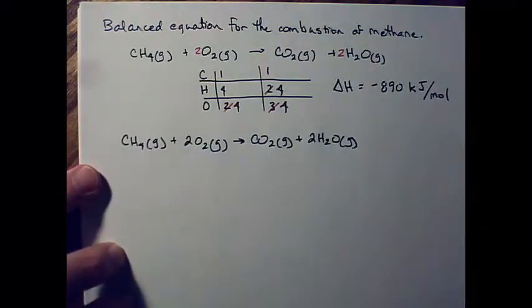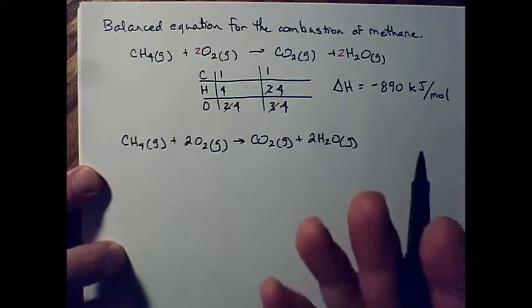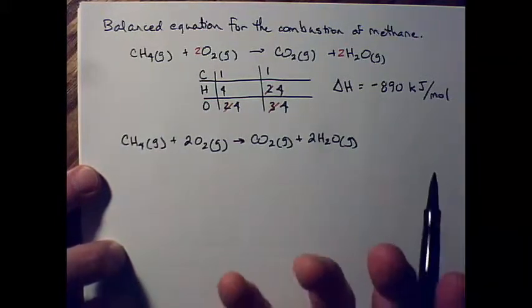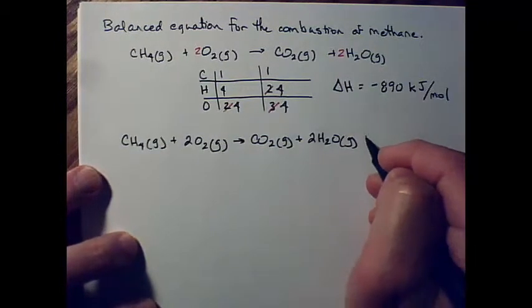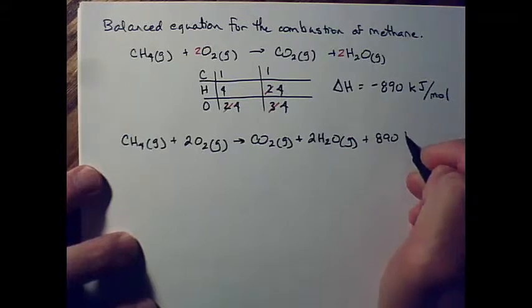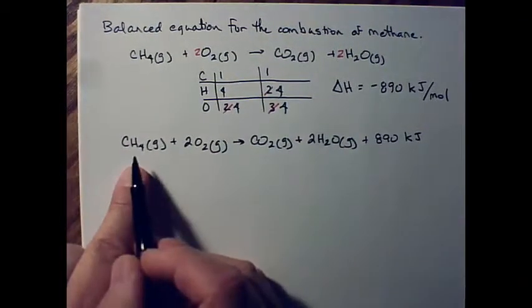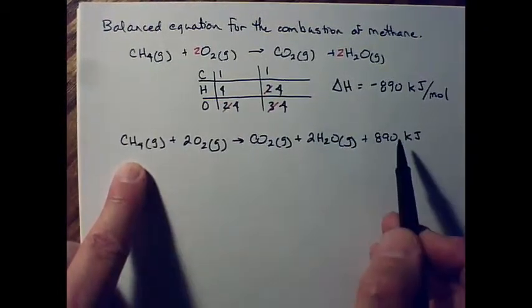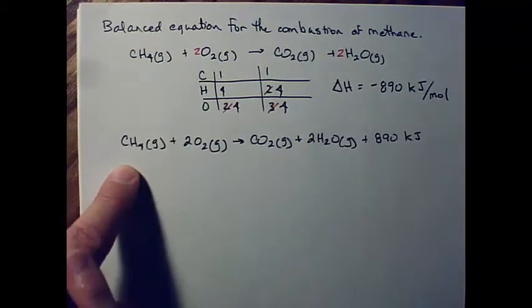Since the product we're getting out is heat, the energy lost by the system is transferring to us. What's transferring to us is the product, so instead of being negative it's positive — plus 890 kilojoules. Notice I didn't write per mole, because there is one mole of methane in the chemical equation, so just putting it in the equation means it's per mole of this.